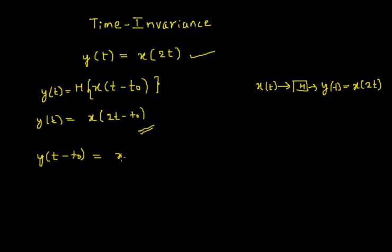So I will get that x of 2. Now I come across t. So I replace this t with t minus t0. Therefore I finally get x(2t - 2t0).